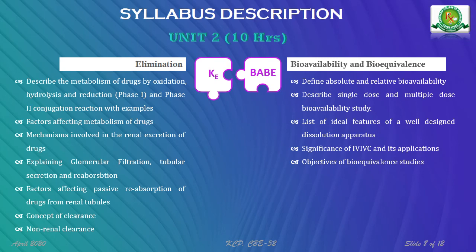Bioequivalence plays a major role in the ANDA (Abbreviated New Drug Application) process. A generic product to be launched on the market need not perform full clinical trials — by proving bioequivalence with the innovator product through in vitro dissolution, the generic can be launched, thereby reducing production and drug costs. This is an important regulatory aspect currently in use.